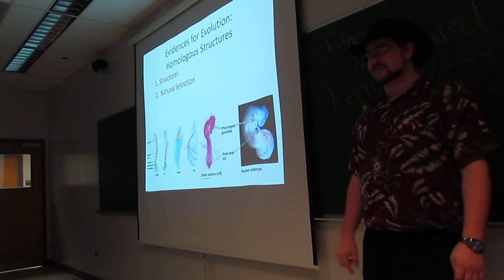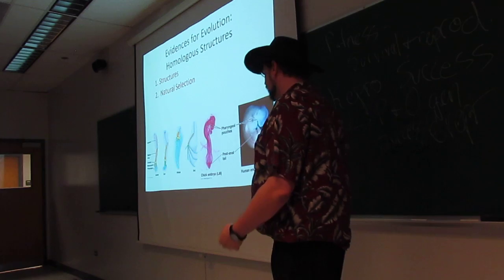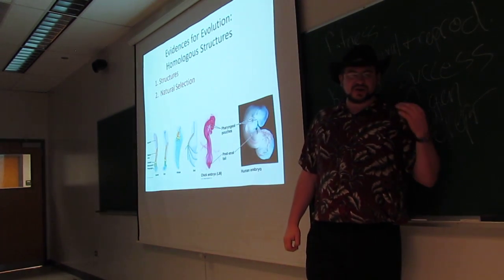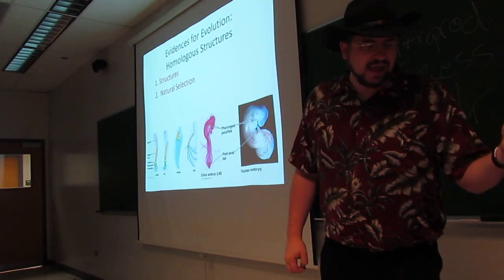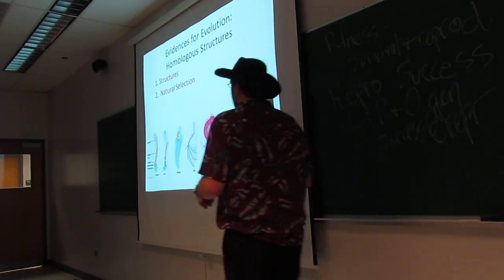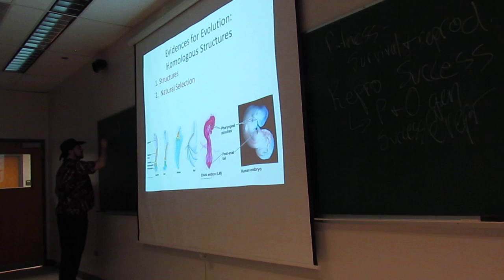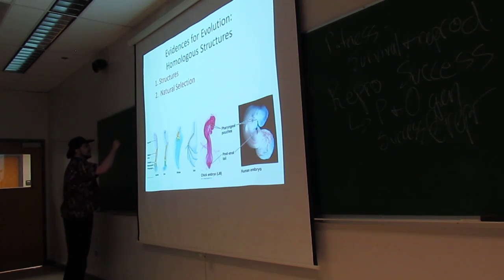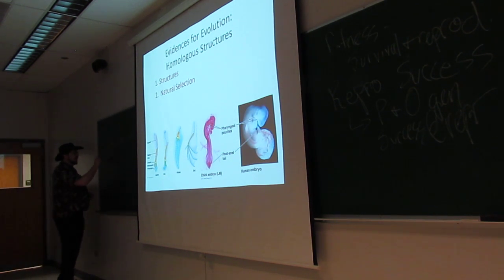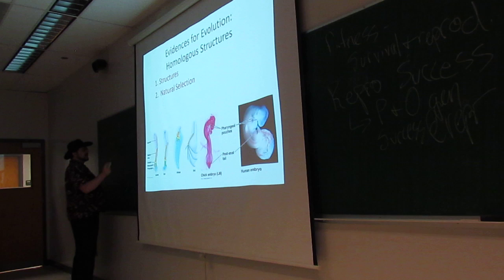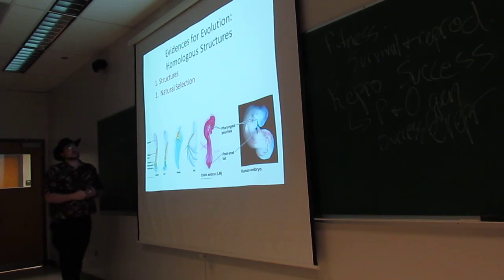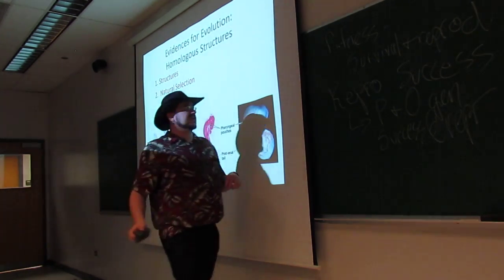More evidence for evolution can be found in homologous structures. A homologous structure is a structure that is derived from a common ancestor, but appears different, has different functions.